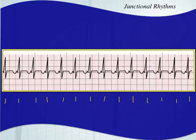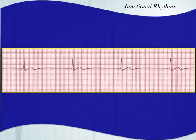Junctional tachycardia doesn't occur nearly as often as sinus tachycardia. In fact, it's very, very rare. You typically only see it as a reperfusion rhythm after cardiac catheterization for a myocardial infarction. Here's a real patient example with a junctional rhythm — the rate's about 40 beats per minute, only four complexes, inverted P waves with a nearly non-existent PR segment, narrow QRS complex, no extra P waves anywhere. This is a junctional escape rhythm.